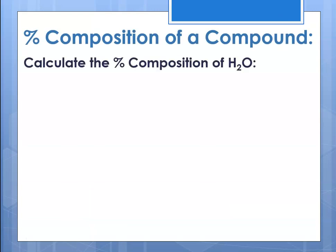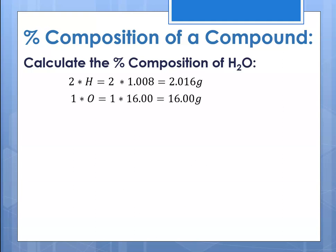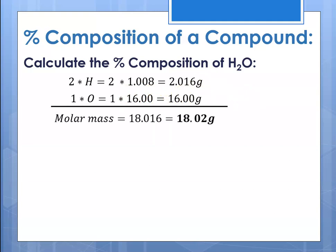Let's calculate the percent composition of water — the percent of hydrogen and the percent of oxygen. We start by calculating the molar mass: two times hydrogen is 2 × 1.008 = 2.016, and then oxygen. Remember, hydrogen gets the thousandths place when pulling its atomic mass from the periodic table, while all other elements use the hundredths place. Adding those together gives a molar mass of 18.016, which rounds to 18.02.